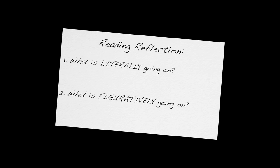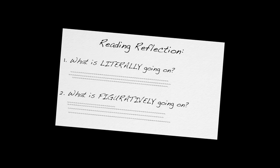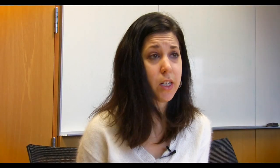The reading reflection is meant to help them work through that process on their own before class with each reading that we do. They have to fill out a cue card that includes answers to those three questions. On the back, I ask them to take a bit more space to think about the relationship between the observations they've made. Often I ask them to phrase that as a question for further discussion in class. Then when they come to class, everyone's got their cue card, and we work through those questions as a group.